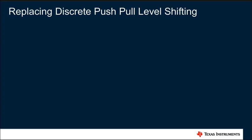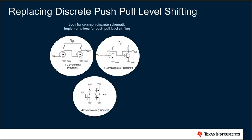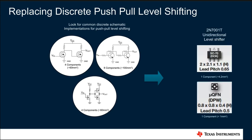Simple level shifting solutions that use discrete components can be implemented using a variety of combinations of devices such as NFETs, PFETs, and resistors. A few common examples are shown here that implement push-pull IO level shifting using discrete components. Each implementation will vary in the number of components and how they are interconnected, often dictated by the rest of the system circuit design. In each case, multiple discrete devices are needed, often taking up varying amounts of board space — and these implementations are frequently found at multiple points on a board, multiplying the impact of component count and board space. In contrast, the 2N7001T allows designers to replace these discrete components with a single IC that dramatically reduces component count and board space usage while simplifying signal routing and reducing circuit board complexity.